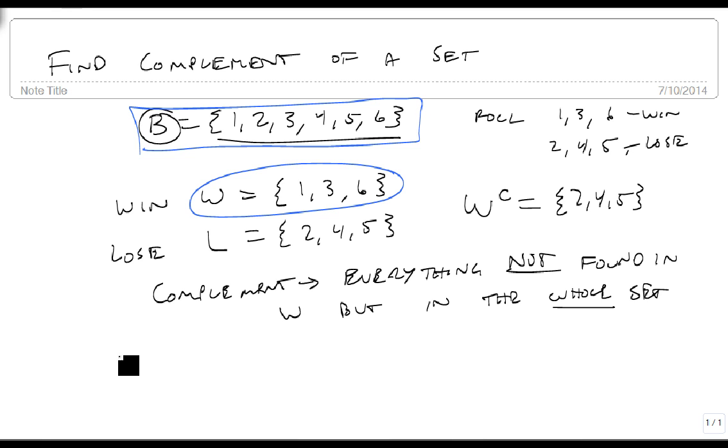So let's suppose for a minute that B again is our complete set, and B is equal to 1, 2, 3, 4, 5. Let's suppose that A is also given to us and is 1, 2, 3.